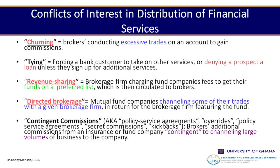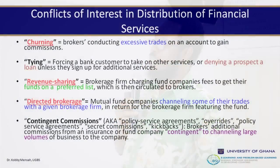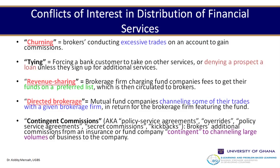Conflicts of interest in distribution of financial services also exist. We have churning — where customer agents or brokerage agents tend to transfer or trade accounts from one company to another, all in anticipation of gaining commission. Brokers conduct excessive trades on an account to gain commission, moving an account from one company to another just to earn that commission.